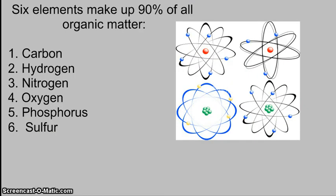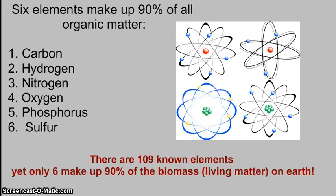When we look at organic matter, 90% of all organic matter is made up of six elements: Carbon, Hydrogen, Nitrogen, Oxygen, Phosphorus, and Sulfur — although not all organic matter has all of them. Out of 109 known elements, we only use six to make up 90% of all the biomass, or living matter on Earth.